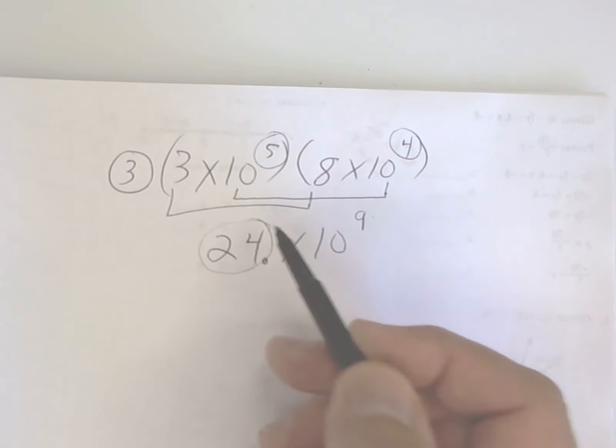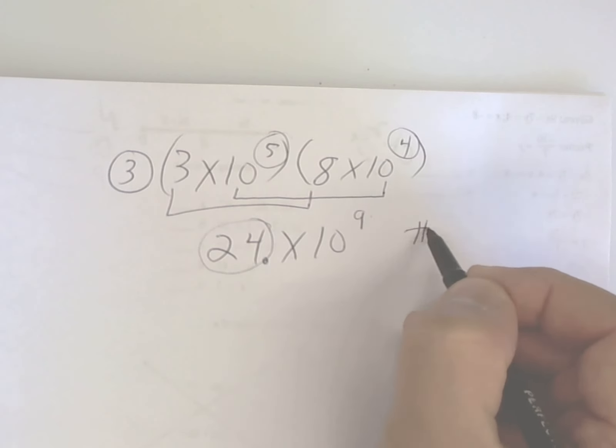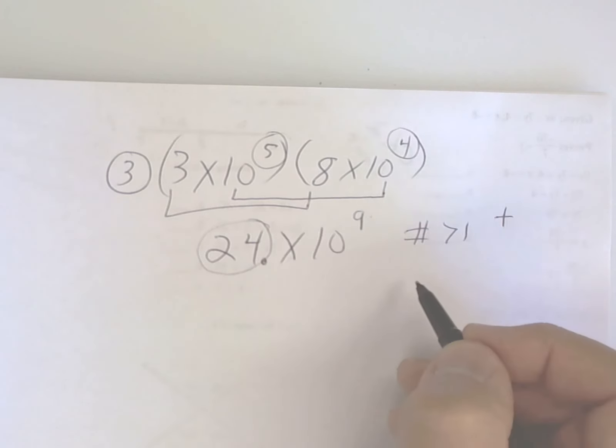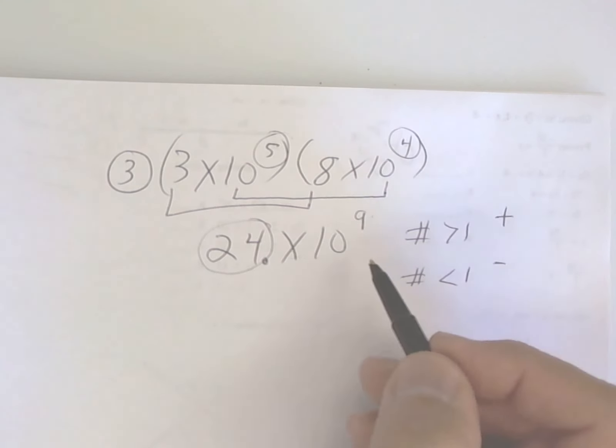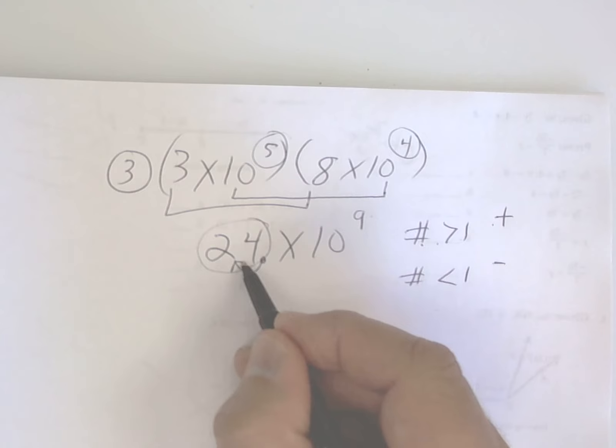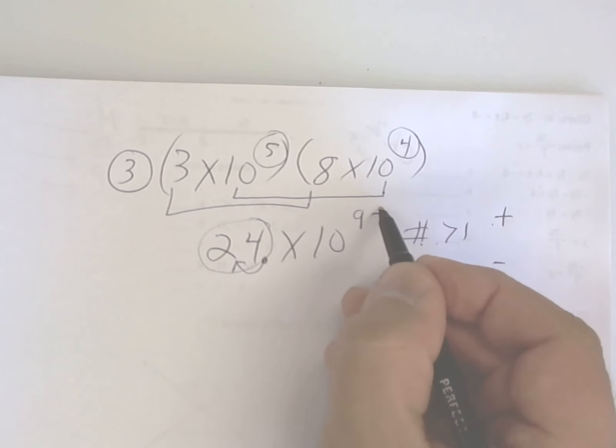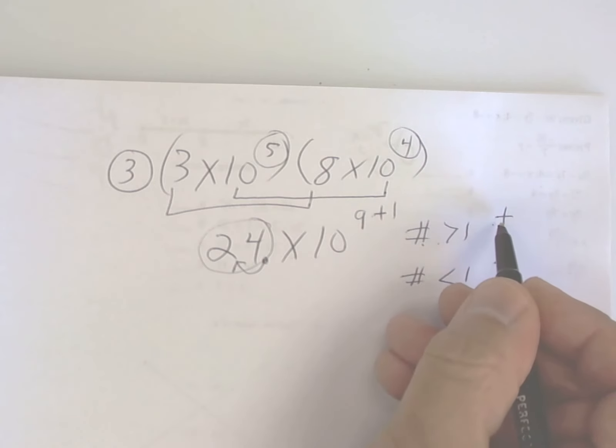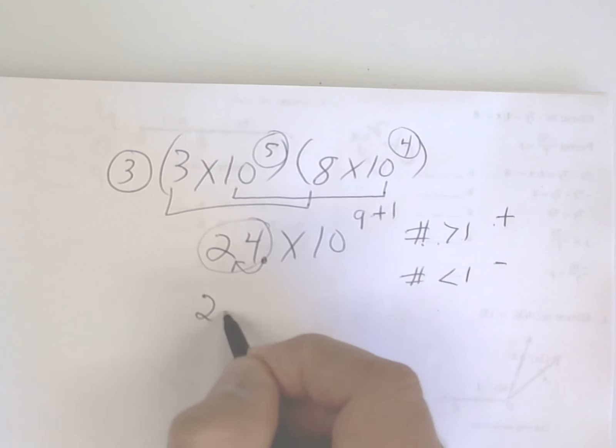If this number is bigger than one, you have a positive exponent. If this number is less than one, you have a negative exponent. Now watch. Since it's bigger than one, we're going to move the decimal one place, but we're going to add one up here since we only had to move it one place, and since it's a positive. So the real answer is 2.4 times 10 to the 10th power.